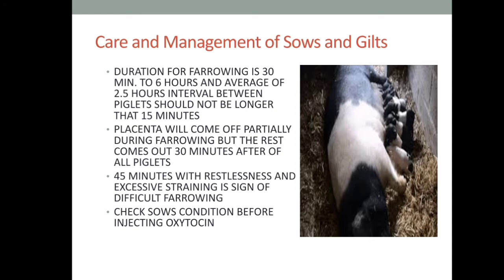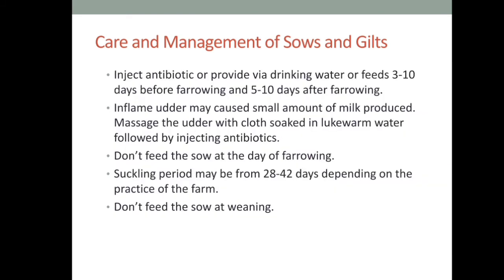45 minutes of restlessness and excessive straining is a sign of difficult farrowing. Always check the sow's condition before injecting oxytocin, which helps regulate and stimulate delivery. Inject antibiotic or provide via drinking water or feed 3 to 10 days before farrowing and 5 to 10 days after farrowing. An inflamed udder may cause a small amount of milk to be produced; massage the udder with warm water followed by injecting antibiotics. Do not feed the sow on the day of farrowing. The suckling period may be 28 to 48 days depending on farm practice. Do not feed sows at weaning.